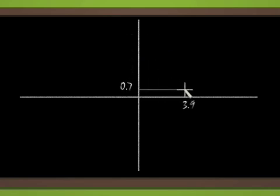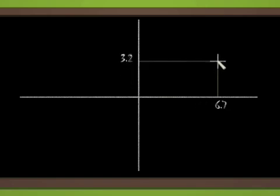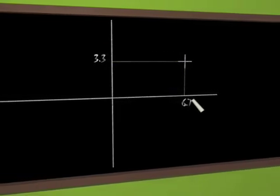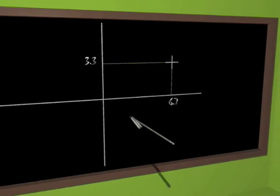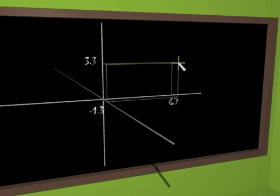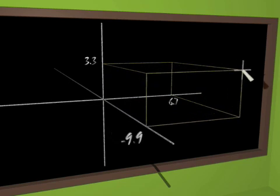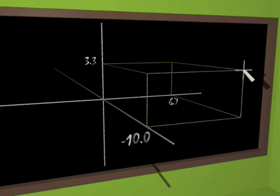If you had to explain to some being living on a line what it is to be a point in the plane unknown to him, you could simply say: a point in the plane is just a pair of numbers. The chalk now writes in the air and draws a third axis, perpendicular to the two previous ones. A point in space is described by three numbers — x, y and z. One could say to reptiles curious to know about our world: a point in space is just three numbers.